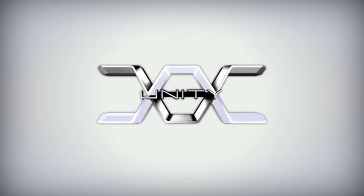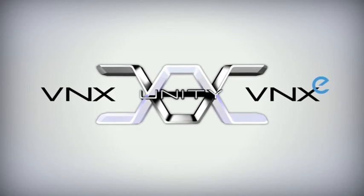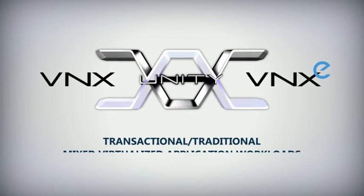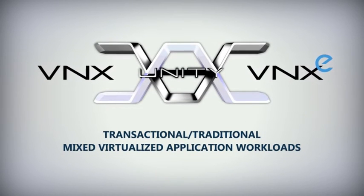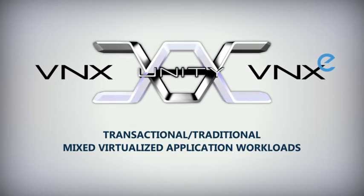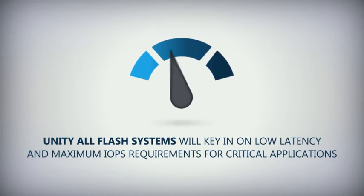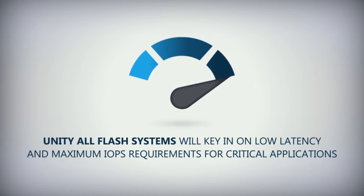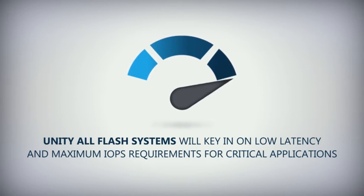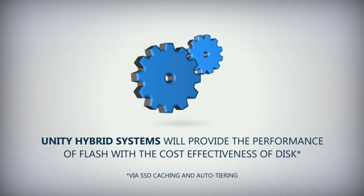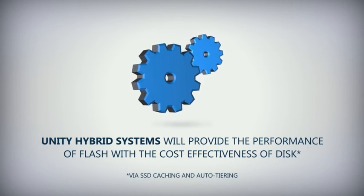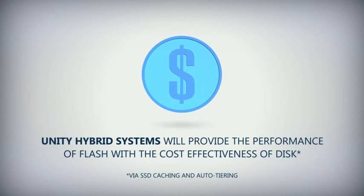Unity, like the VNX and VNXe family, will remain focused on targeting transactional and traditional mixed virtualized application workloads — file, block, and vVols — within the mid-range segment. Unity all-flash systems will key in on low latency and maximum IOPS requirements for critical applications, while Unity hybrid systems will align with providing the performance of flash with the cost-effectiveness of disk for a similar mixed application environment.